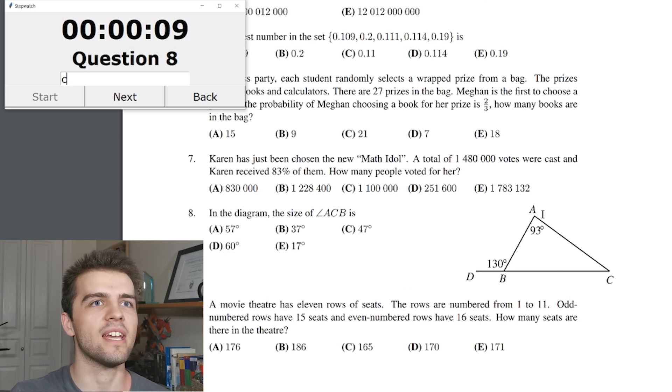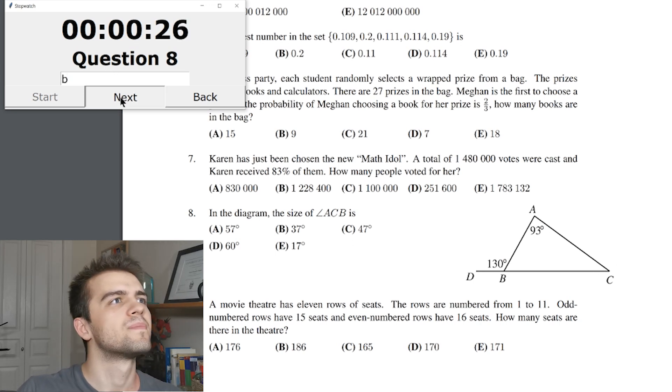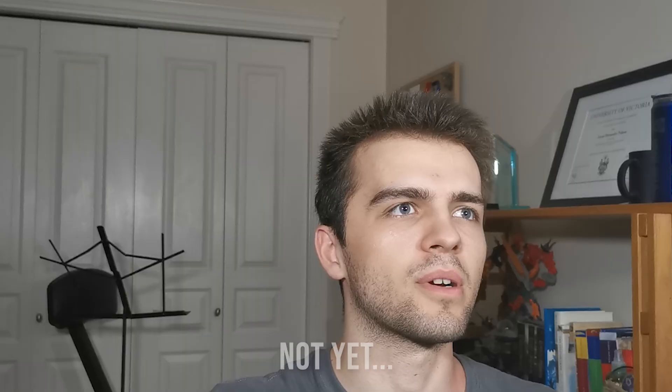Alright, question eight. In the diagram, the size of angle A... Oh, this ice. A, C, B. Well, I got 93 degrees here. That means that this angle here is 50 degrees, because this sums to 180. 93 plus 50 is 143, so this has to be 37, and the answer must be B. Correct. Good. No more ice.